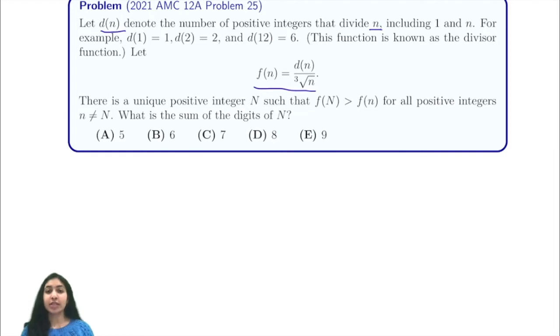We're trying to find some unique integer N such that f(N) is greater than all the values of the function, and we're trying to find the sum of the digits of N. In this problem, the key observation is that it's a multiplicative function.